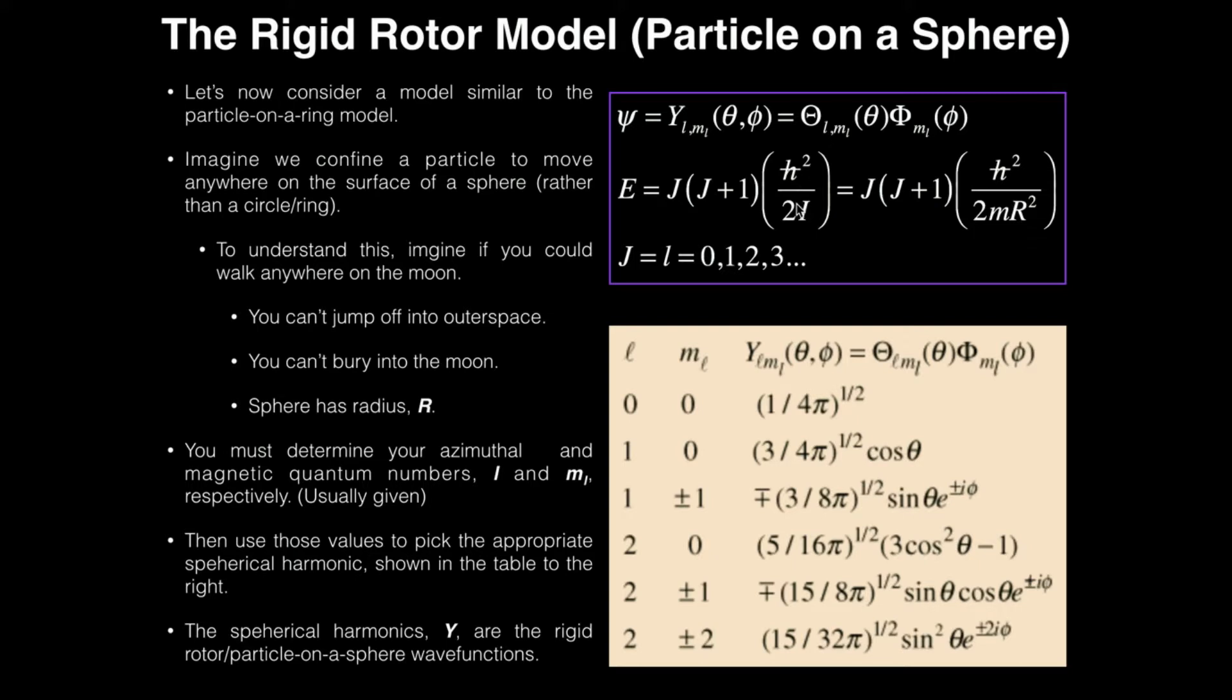H-bar is just h-bar, and then you divide by 2i. Now remember, i is the moment of inertia, and so this i you can expand into the product of m and r squared. So generally speaking, you're not given a moment of inertia, but you are given the mass of the particle because generally we're confining an electron, which you can look up the mass of an electron, and then you'll be typically given the radius of the sphere.